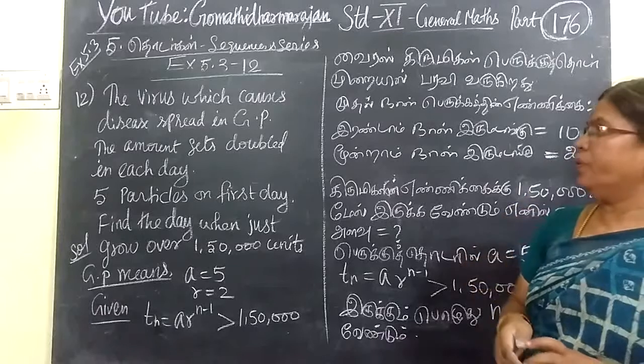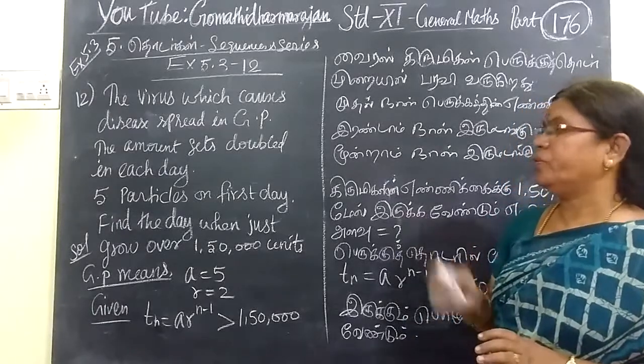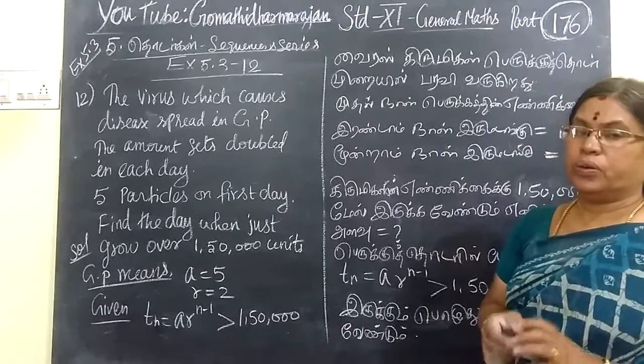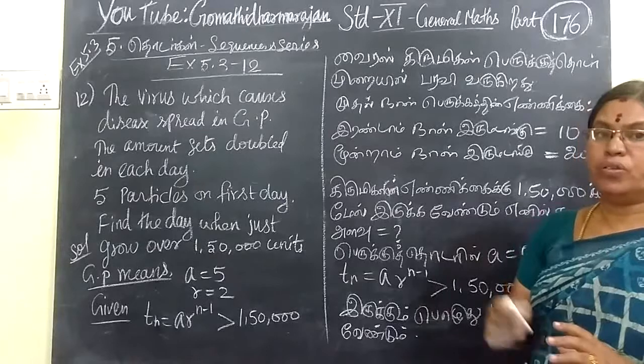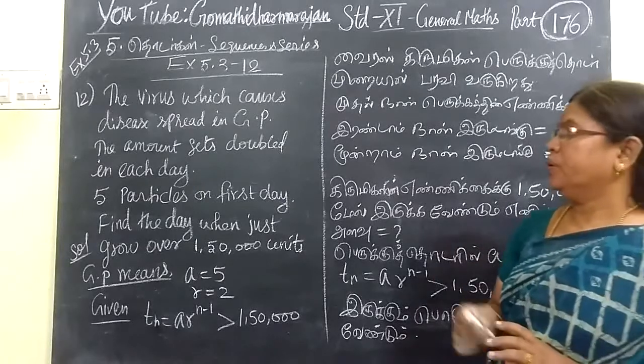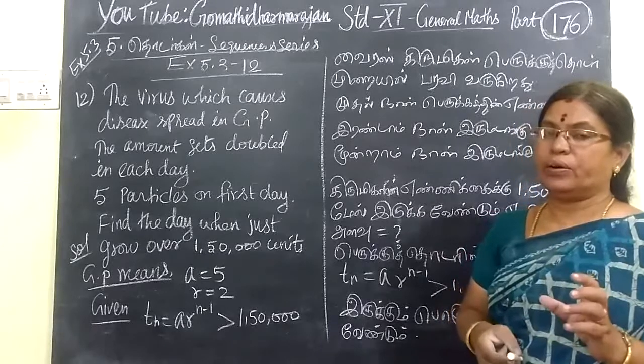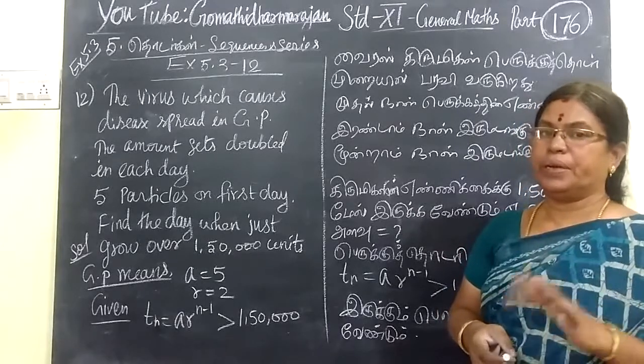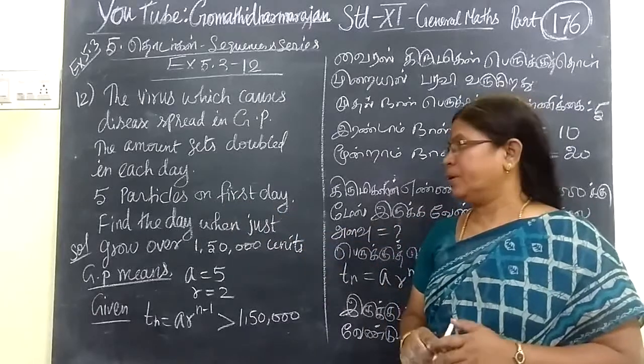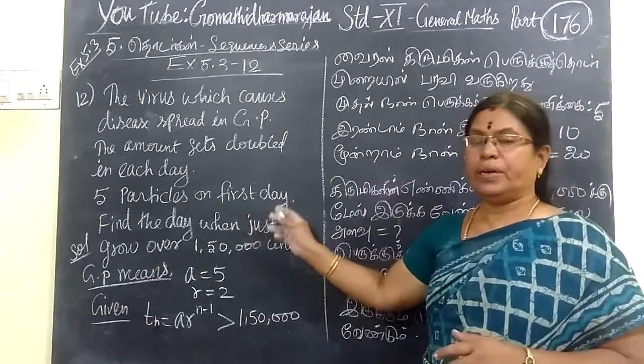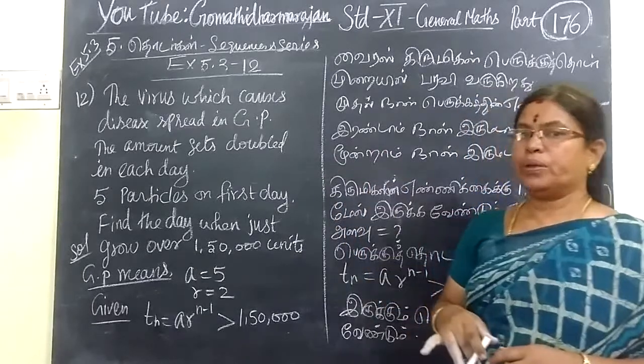You are given that the virus causes disease spread in geometric progression. For certain terms, the virus disease forms in geometric progression. The amount is doubled each day. First day is given as 5 particles on the first day. Second day is about 10 days. Third day is about 20. So, double-double is going to be a geometric progression problem.